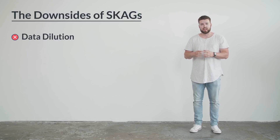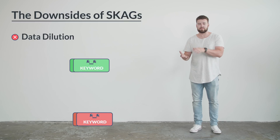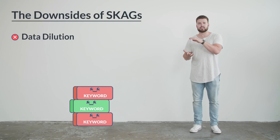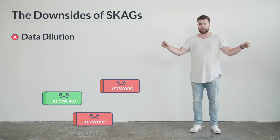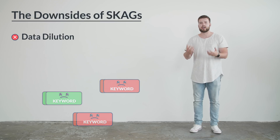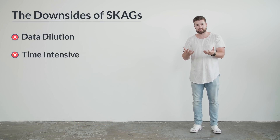Before you get started with single keyword ad groups, there are some downsides you want to consider. The first one is called data dilution. In a regular sense, when you have an ad group, you have many keywords in that ad group and a few ads. When you split them up with single keyword ad groups, you're basically stretching all that traffic out to different sources, and that means that your ads will take longer to test. The other downside is that it will take you longer to set up and longer to manage. But the upside is that there's a good chance your competitors are not taking advantage of it because of that — and because they're potentially lazy.